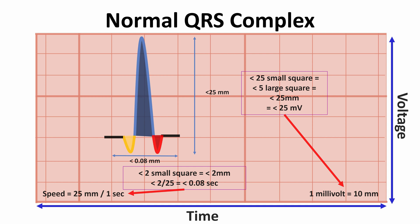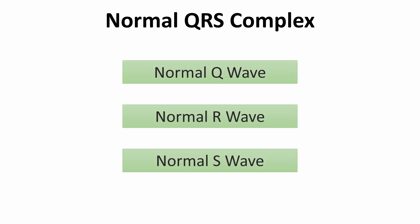When the ECG grid is set so that 1 mV equals 10 mm, that equals 10 small squares. Now I want to understand each wave separately. Let's start with the normal Q wave.